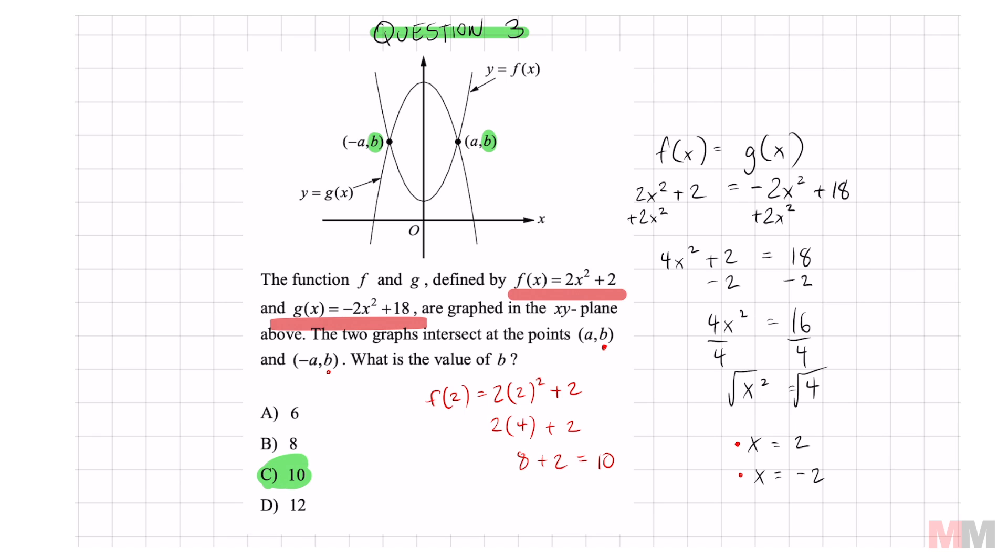If you plug in the other one, I think you'll get the same answer. You'll get the same answer. Because that's going to be 2 times negative 2 squared plus 2. And negative 2 squared ends up being 4 anyways. So you're still going to get 10. Hopefully you got some practice out of this one. And if you enjoyed it, throw a like, subscribe. I'll try to run through as many SAT problems as I can. But until then, I will see you on the next episode. Peace.